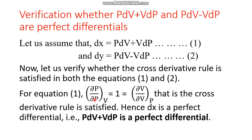For equation 1, del M by del y at constant x: M is p and y is also p, so del p by del p equals 1. Similarly, for the second term, del N by del x at constant y: N is V and x is also V, with constant y being p. Since both N and x are the same variable, this is also 1. So del V by del V at constant p equals 1, and the cross derivative rule is satisfied. Therefore pdV plus Vdp is a perfect differential.